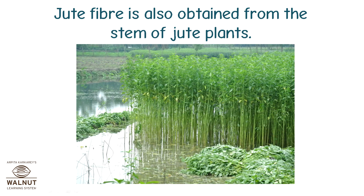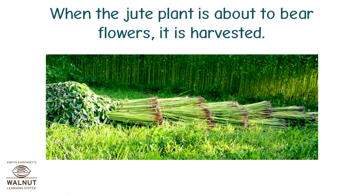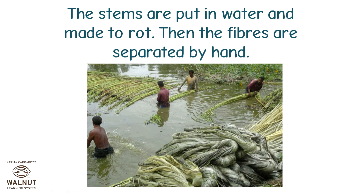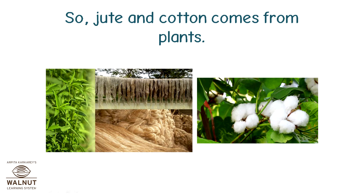Jute fibre is also obtained from the stem of the jute plant. When the jute plant is about to bear flowers, it is harvested. The stems are put in water and made to rot. Then the fibres are separated by hand. So, jute and cotton come from plants.